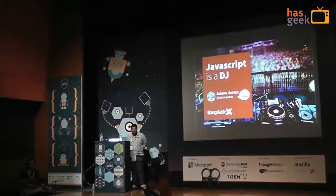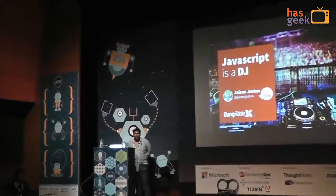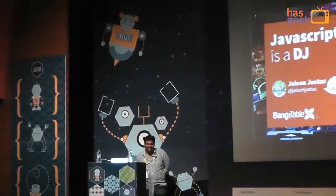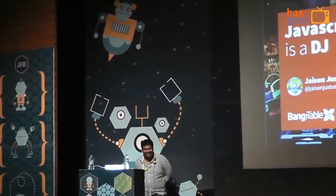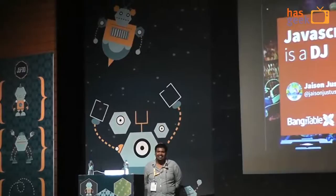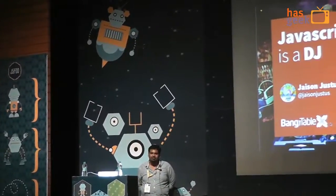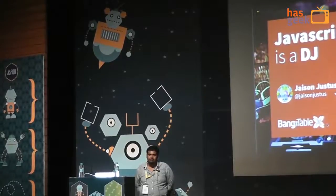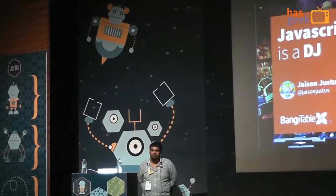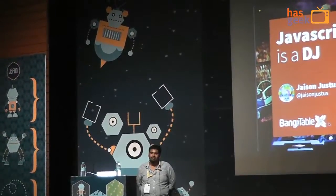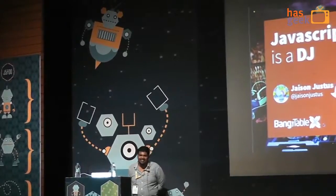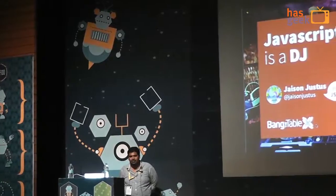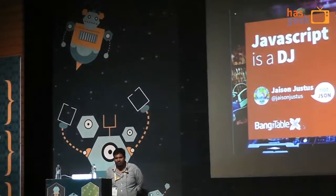Jason is a developer at Bang the Table. JavaScript has been his playground for the last couple of years with endless personal projects, and it keeps him occupied. He loves architecting web apps, became a fan of Angular and Backbone, designs interfaces, learns illustration, and is actually making a bunch of progress with his comic book on Git. He's doing his presentation on HTML5 audio — Jason, take it away.